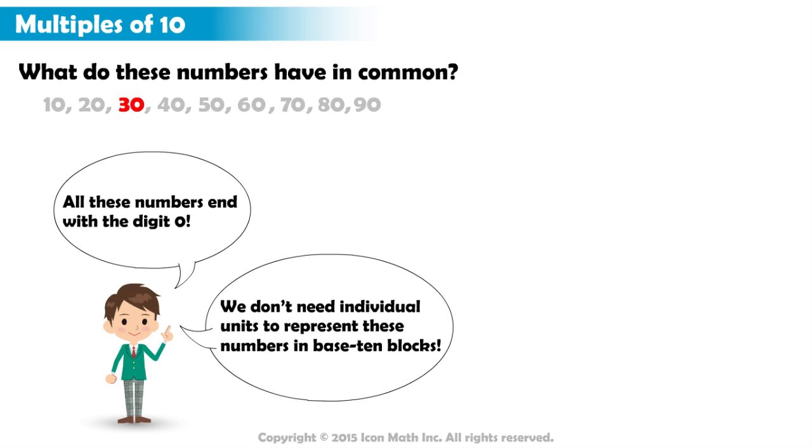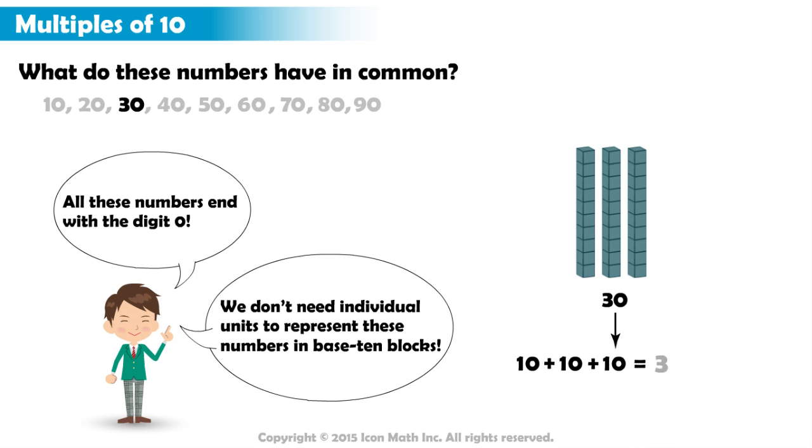For 30, we will need three rods. Because we have three 10s, which is the same as 3 times 10.